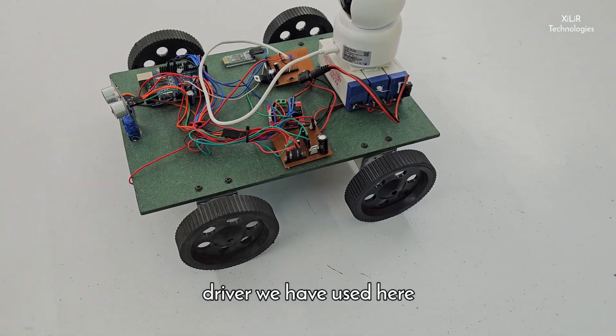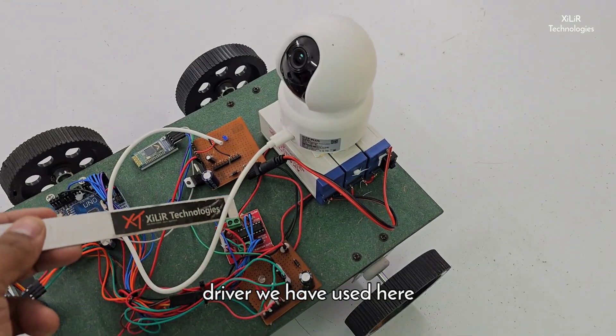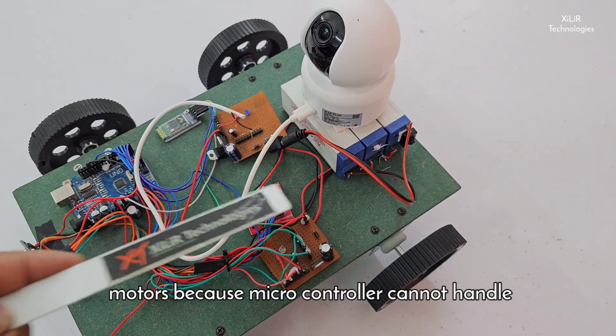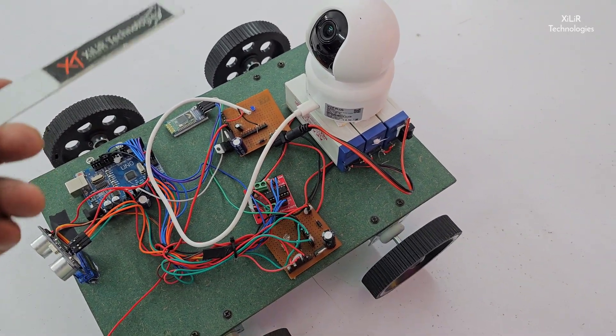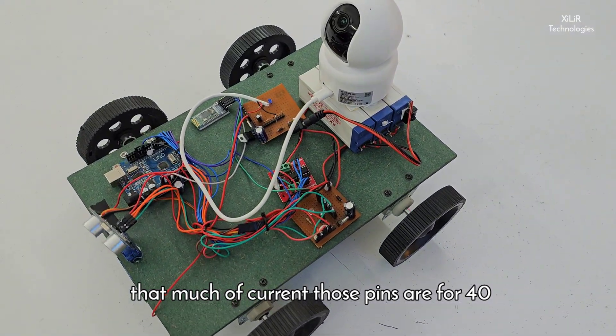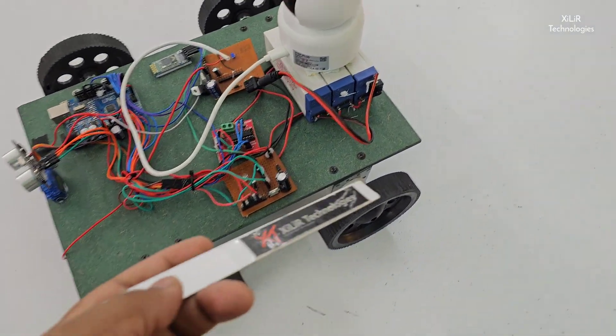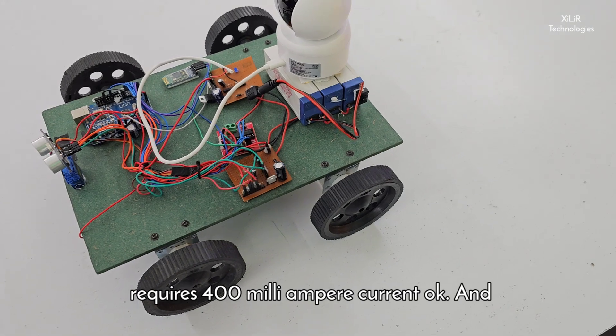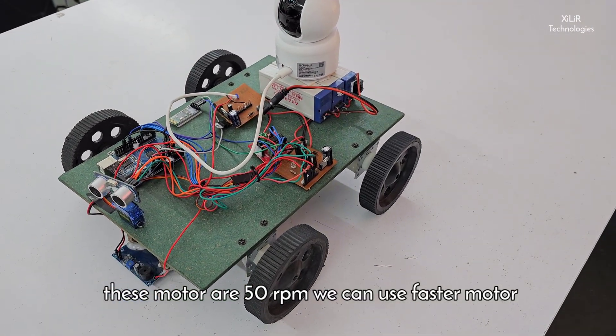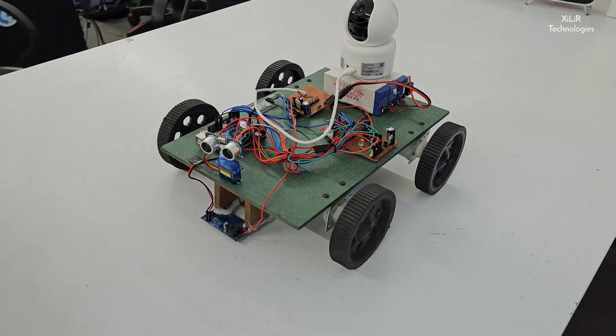And motor driver we have used here, L293D motor driver, so that we can control these motors. Because microcontroller cannot handle that much of current - those pins are for 40 milliamp current only and these motors required 400 milliamp current. And these motors are 60 RPM. We can use faster motor.